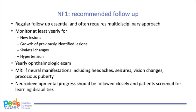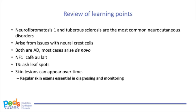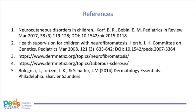Today we reviewed the two most common neurocutaneous disorders, NF1 and TS. Both disorders are autosomal dominant, with most cases occurring de novo. NF1 presents with hyperpigmented café au lait spots, and TS presents with hypopigmented ash leaf spots. Neurocutaneous disorders have a wide range of presentations, all affecting the skin and nervous system as well as other systems. As illustrated in the case, patients may not meet diagnostic criteria at initial presentation, making regular follow-up and monitoring essential to make a diagnosis as early as possible.